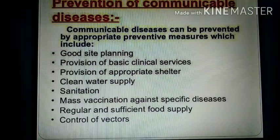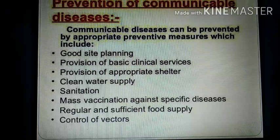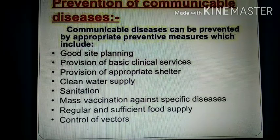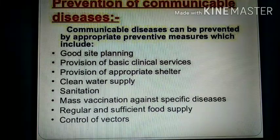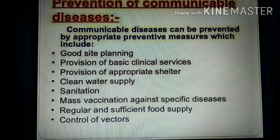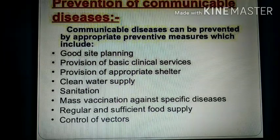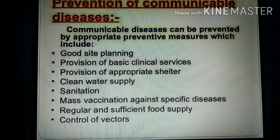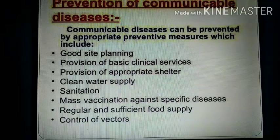Communicable diseases can be prevented by appropriate preventive measures, which include good site planning, provision of basic clinical services, provision of appropriate shelter, clean water supply, proper sanitation of the environment, mass vaccination against specific diseases, regular and sufficient food supply, and control of vectors. Malaria, for example, is a vector-borne disease. Through these measures, we can control communicable disease.